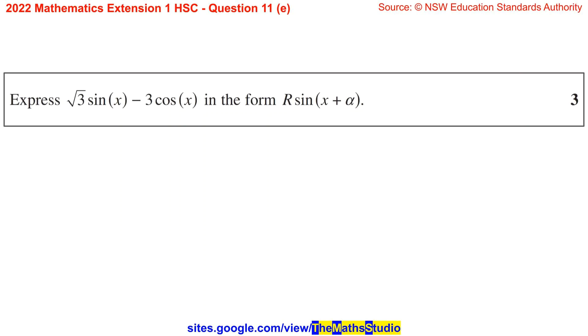Question 11e. Express the square root of 3 sine x minus 3 cos x in the form r sine x plus alpha.